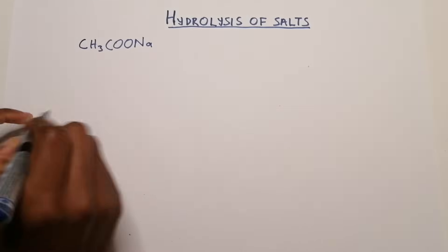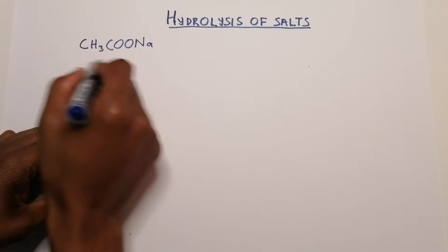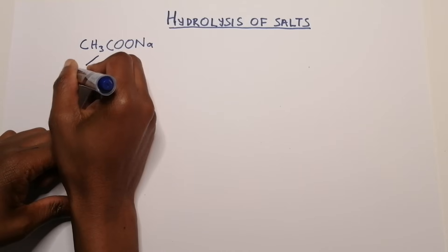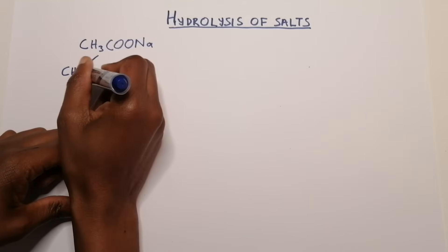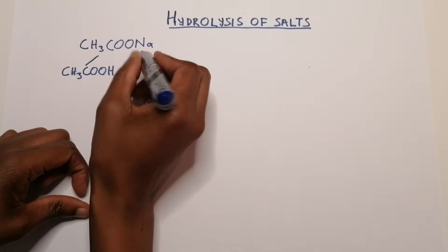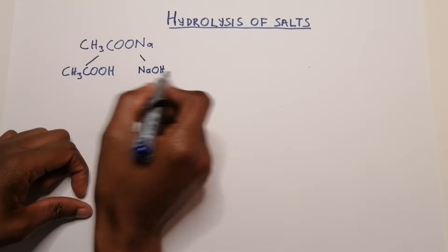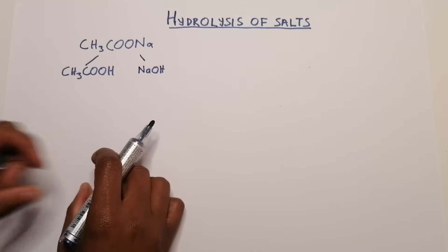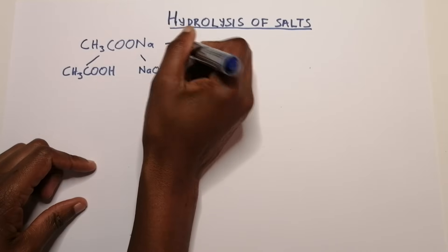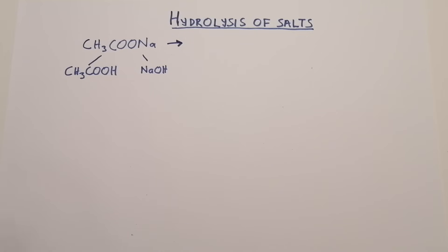What we do is take this salt and find out where it actually comes from. CH₃COO⁻ would have come from CH₃COOH, which is ethanoic acid. The sodium portion comes from sodium hydroxide. So in order to produce this salt, you took sodium hydroxide and ethanoic acid — an acid reacting with a base. Now we're going to let the salt undergo dissociation.